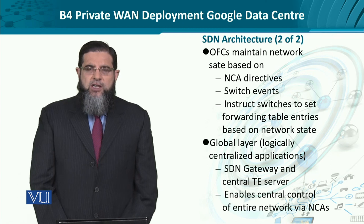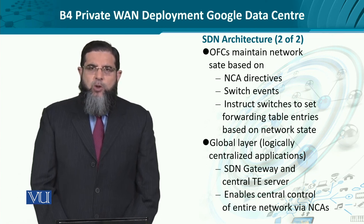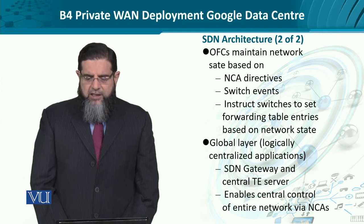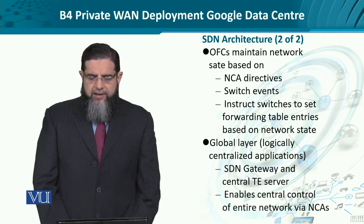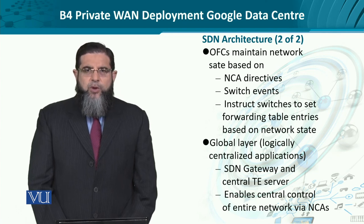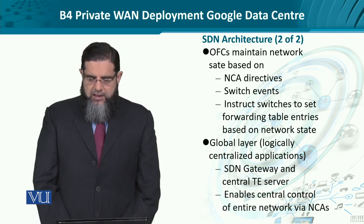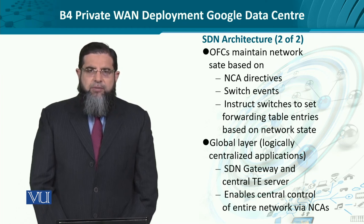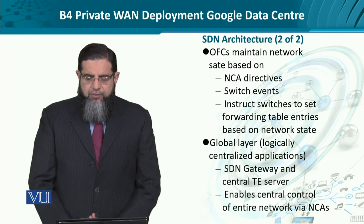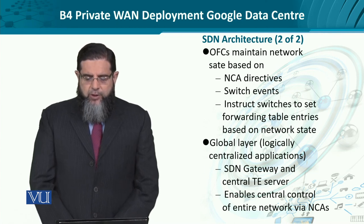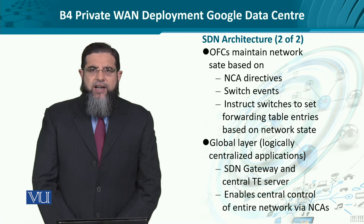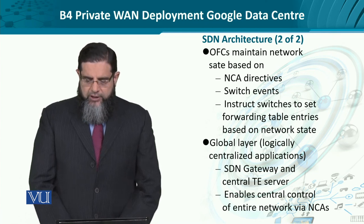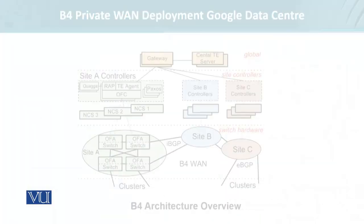The optimized forwarding states are based on the modified network state. And then we have the global layer. The global layer uses the SDN gateway or the traffic engineering server as a unified mechanism to provide control over the entire network through the network control applications.